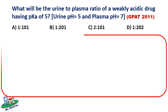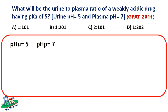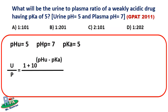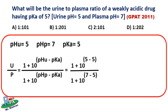First, write down the given values: pH of urine equals 5, pKa of the drug equals 5, and pH of plasma equals 7. Since urine-to-plasma ratio is asked for an acidic drug, the formula to use is: (1 + 10 raised to pHu minus pKa) divided by (1 + 10 raised to pHp minus pKa). Substituting values: numerator is 1 + 10 raised to (5 minus 5) = 1 + 10^0; denominator is 1 + 10 raised to (7 minus 5) = 1 + 10^2.